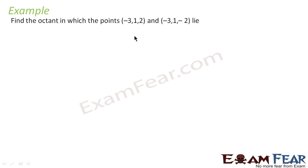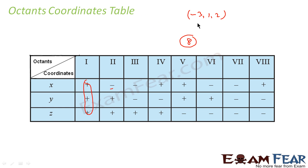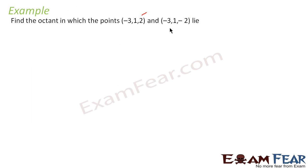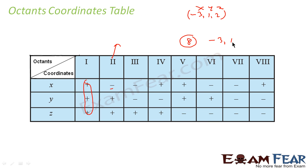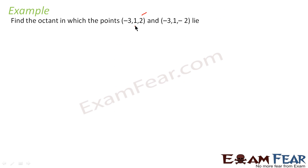Let's take some examples. First, we have to find the octant in which (−3, 1, 2) lies. If you see — x is negative, y is positive, z is positive — the second octant satisfies this condition. Similarly for (−3, 1, −2): x is negative, y is positive, z is negative — the sixth octant satisfies this. So (−3, 1, 2) is in the second octant and (−3, 1, −2) is in the sixth octant.